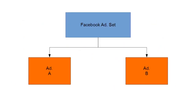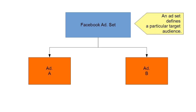First of all, you have your Facebook ad set, and then you have two ads. For the sake of argument, let's call them ad A and ad B. Now an ad set defines a particular target audience, and it's also used to define your budget, your schedule, and the bid type.